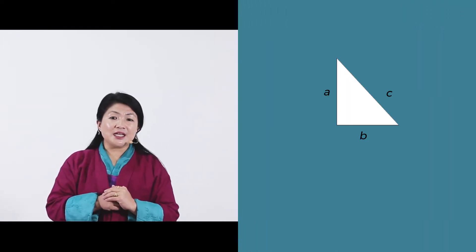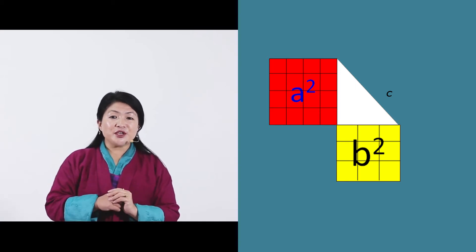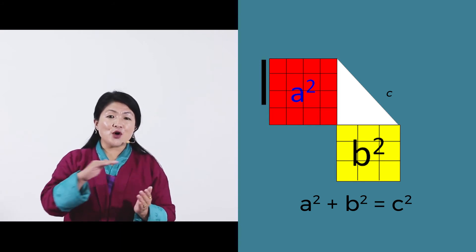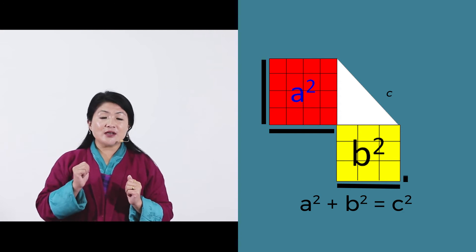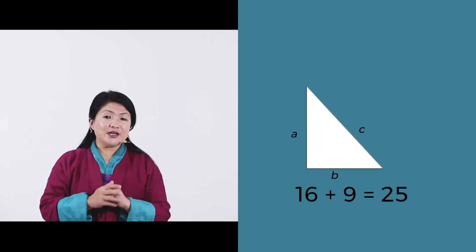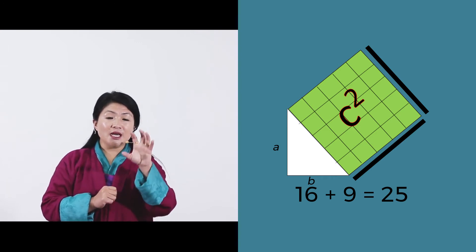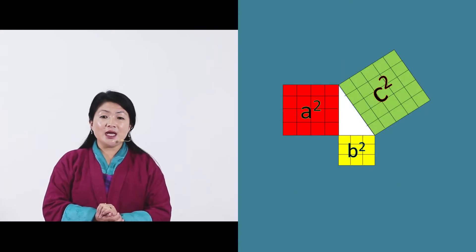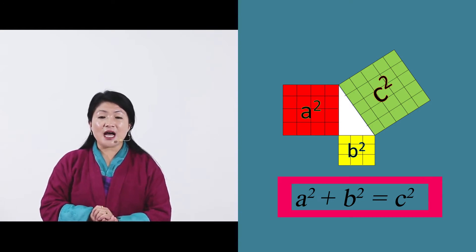I have a right triangle here. Let's draw a square on side A and a square on side B. According to the Pythagorean Theorem, when we add the area of A and area of B, it should equal the area of C. Area of A is 4 columns by 4 rows, which makes 16 square units. Area of B is 3 rows by 3 columns, that is 9 square units. When we add 16 and 9, we get 25. Now for area of C: 5 rows, 5 columns, 5 times 5 gives us 25. So area of A plus area of B equals area of C.